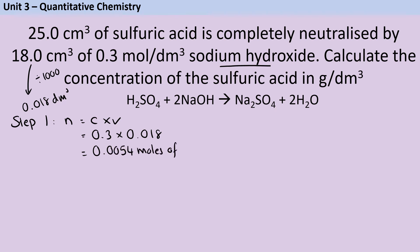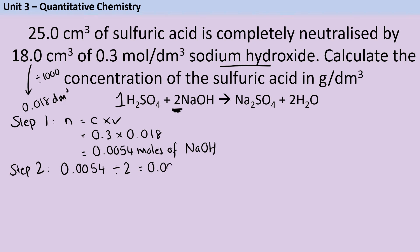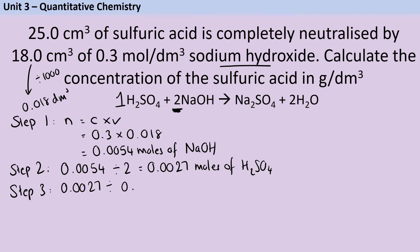Step two: using the equation, there are two moles of sodium hydroxide for every one mole of sulfuric acid, so divide by two: 0.0054 ÷ 2 = 0.0027 mol H₂SO₄. Step three: work out the molar concentration — 0.0027 ÷ 0.025 = 0.108 mol/dm³. That already accounts for four of the six marks.